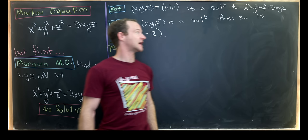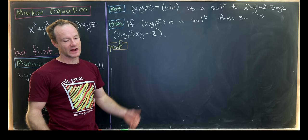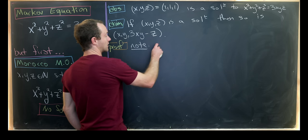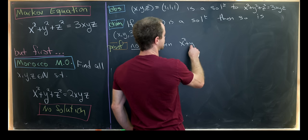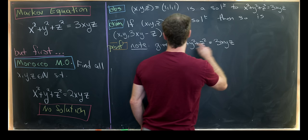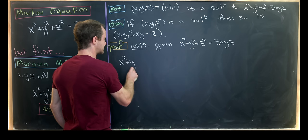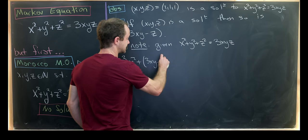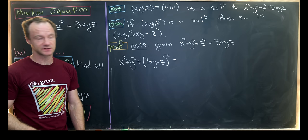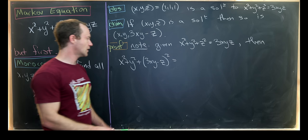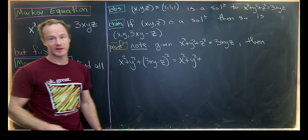So the claim goes like this. If the triple (X, Y, Z) is a solution, so is the triple (X, Y, 3XY - Z). So how can we check this? Well, it's as easy as just plugging this triple into our left-hand side of this equation and showing that it reduces to the correct version of the right-hand side of this equation. So let's get to it. Let's note that we are given first that X² + Y² + Z² = 3XYZ. That's what it means for the triple (X, Y, Z) to be a solution.